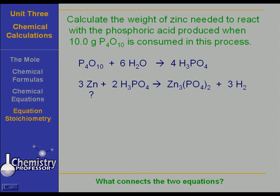Here is the way it works. You've got to locate what connects the two equations. You want to get from P4O10 down to zinc, but you've got to have a connection between the two equations. Something produced in the first equation has got to be consumed in the second equation. And what is it? It is the phosphoric acid.